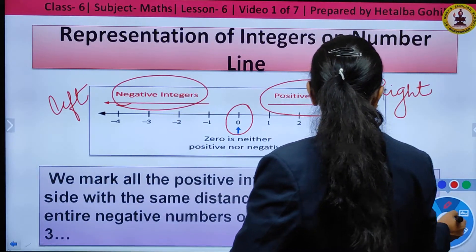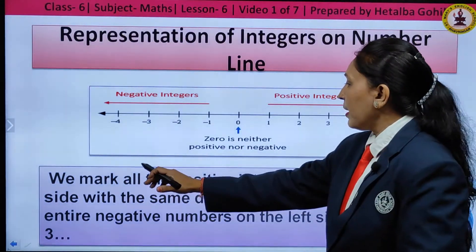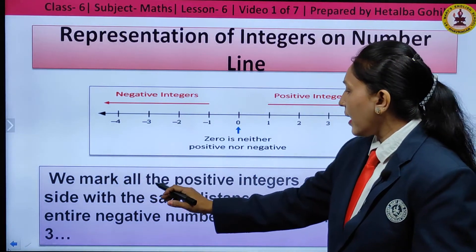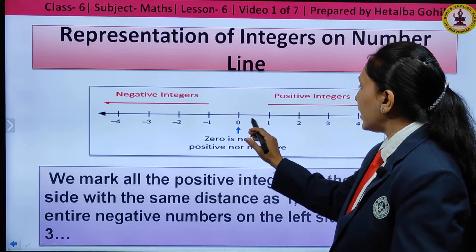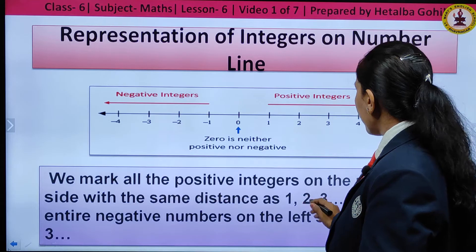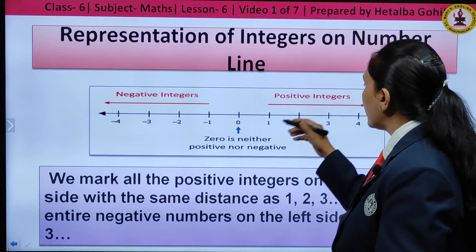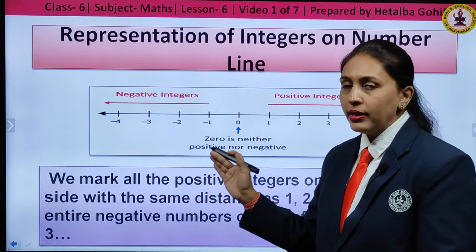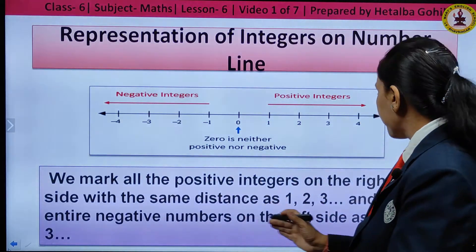When we mark all positive integers on the right side, the distance between each number must be equal. They go in order: 1, 2, 3 and so on. You cannot write them out of order; the spacing between each number must be equal.